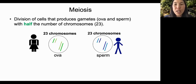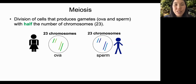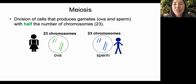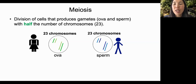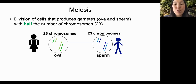Meiosis is the division of cells that produces gametes — ova and sperm — with half the number of chromosomes, 23. So instead of having 46 chromosomes in the egg and 46 chromosomes in the sperm, they each only have 23 chromosomes. That way, when they combine to make the new zygote, it has 46 chromosomes, which is the right amount.